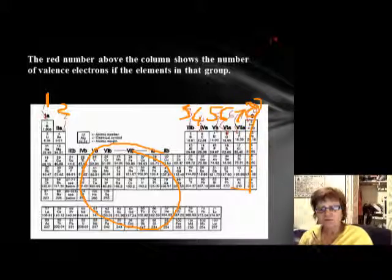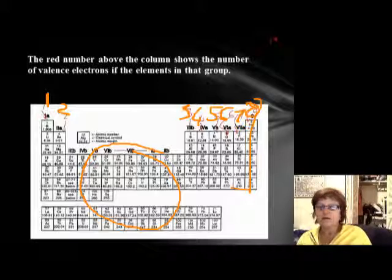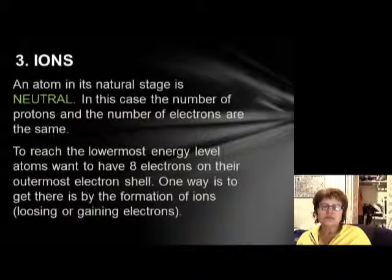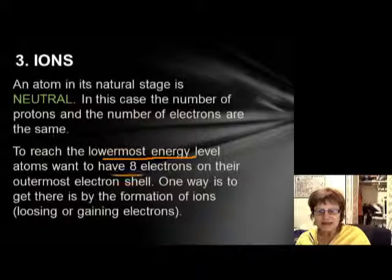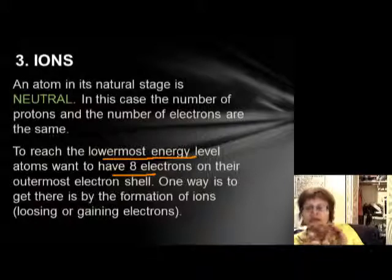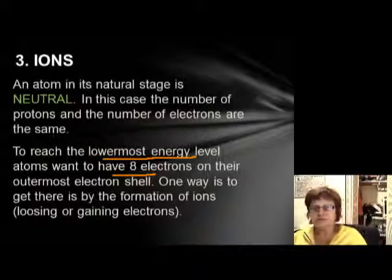The noble gases already have eight, so they're happy and will never try to gain or lose electrons. Now we get to ions. In their natural state, atoms have the same number of protons and electrons. One way atoms reach the stable lowest energy level is by losing or gaining electrons. Losing or gaining electrons is the keyword for ionic bonds.